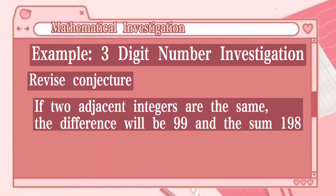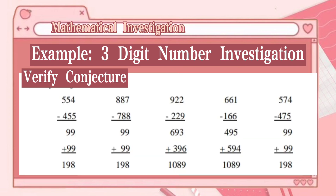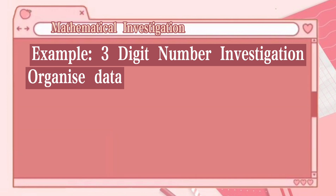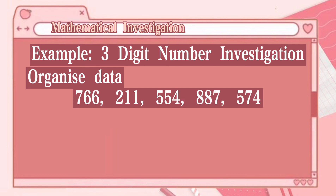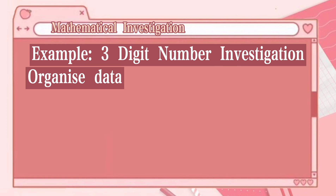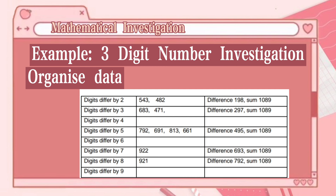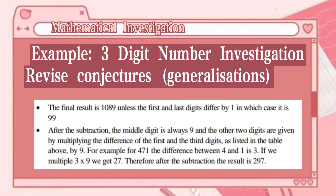Revised conjecture: if two adjacent digits are the same, the difference will be 99 and the sum is 198. Let's verify: 554 − 455 = 99, and 99 + 99 = 198. Same with 887 and other such numbers. Numbers that resulted in a difference of 99 and sum of 198 include 766, 211, 554, 887, and 574. Look carefully at these numbers — the first and third digits differ by 1. Organizing by grouping: the final result is 1089 unless the first and last digits differ by 1, in which case it is 99.